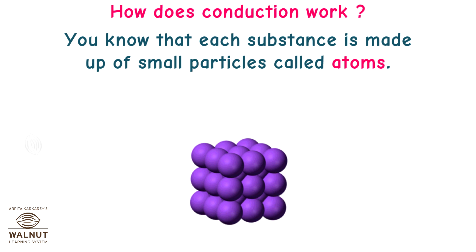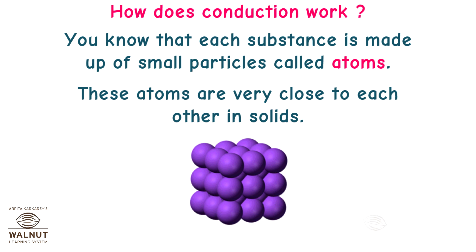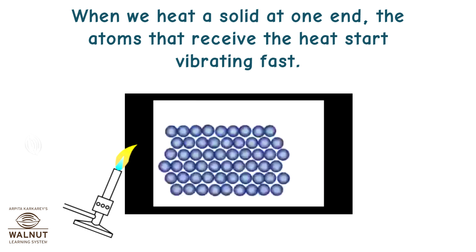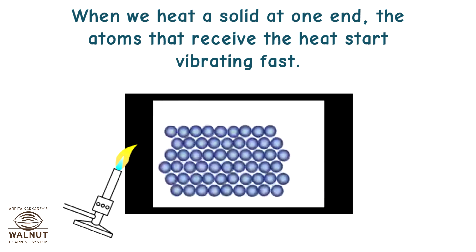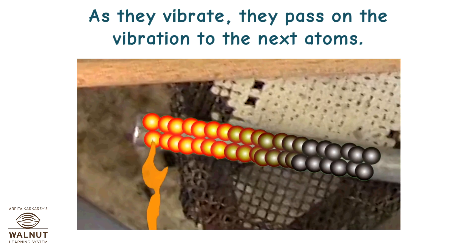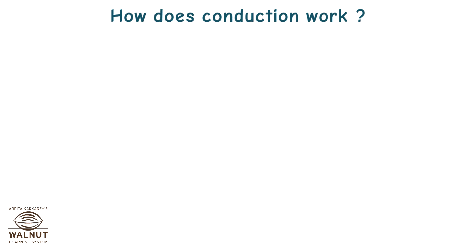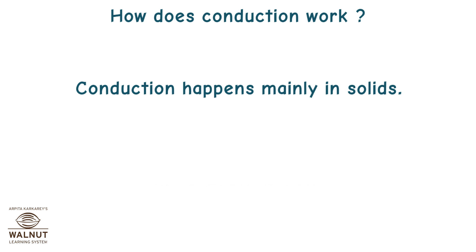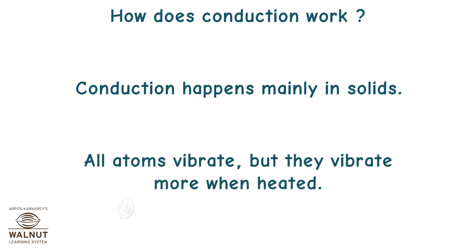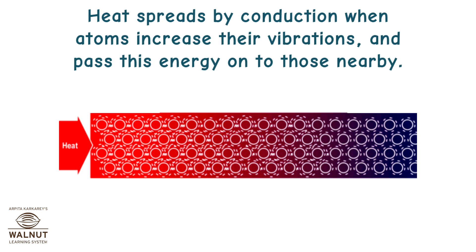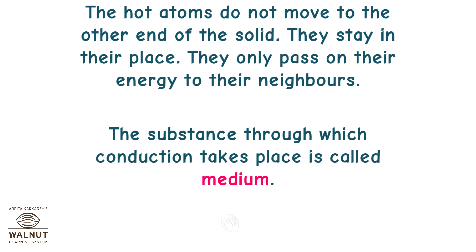How does conduction work? You know that each substance is made up of small particles called atoms. These atoms are very close to each other in solids. When we heat a solid at one end, the atoms that receive the heat start vibrating fast. As they vibrate, they pass on the vibration to the next atoms. Conduction happens mainly in solids — all atoms vibrate, but they vibrate more when heated. The hot atoms do not move to the other end; they stay in their place and only pass on their energy to their neighbors.